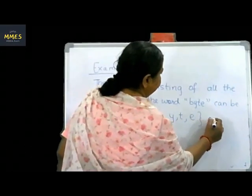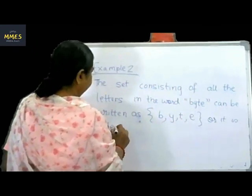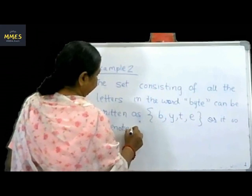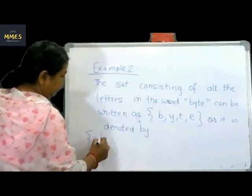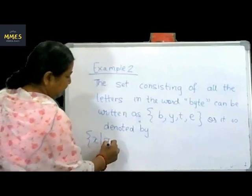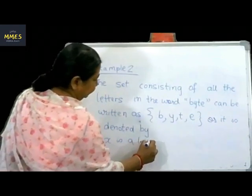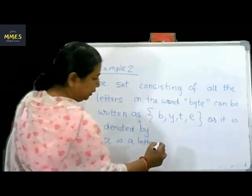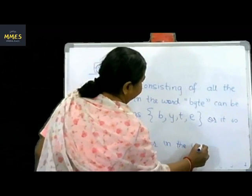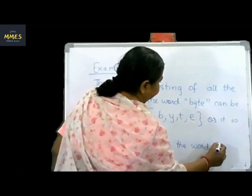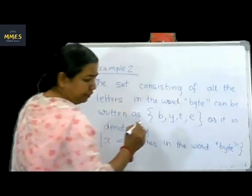The set of letters in the word 'byte' is denoted by {X : X is an element of the set such that X is a letter in the word 'byte'}, end of curly brace.